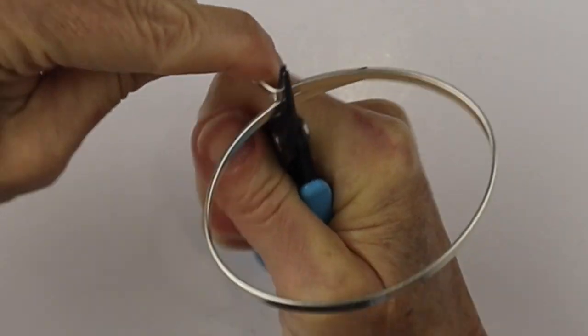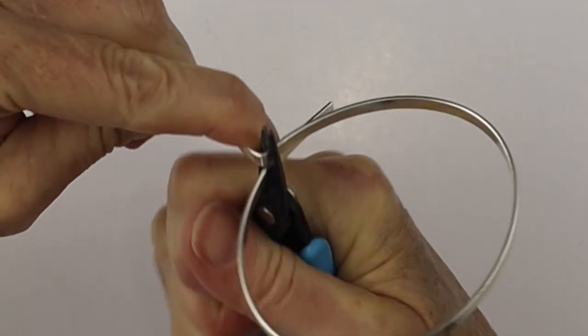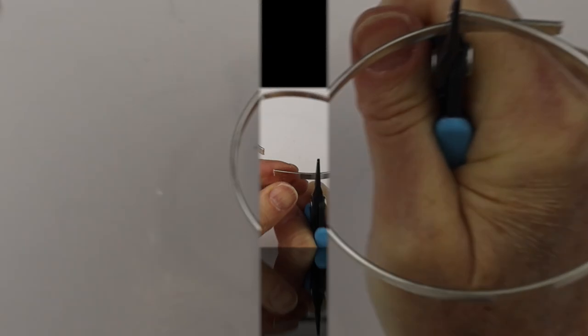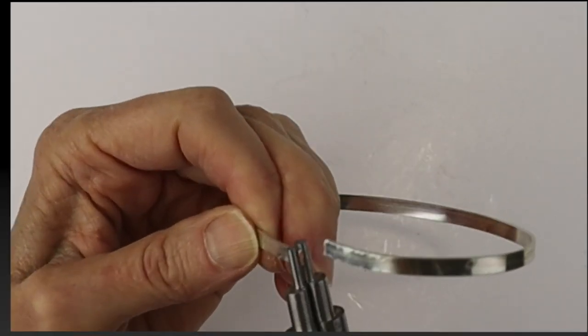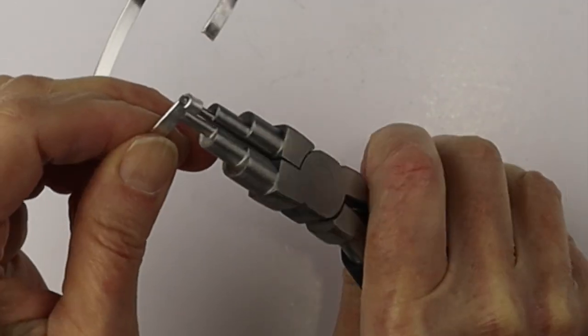I'm actually just going to bend it back and forth to snap it because this one is so thick that you don't want to use your good cutters to clip it. We're going to bend it at the same spot on the other side.